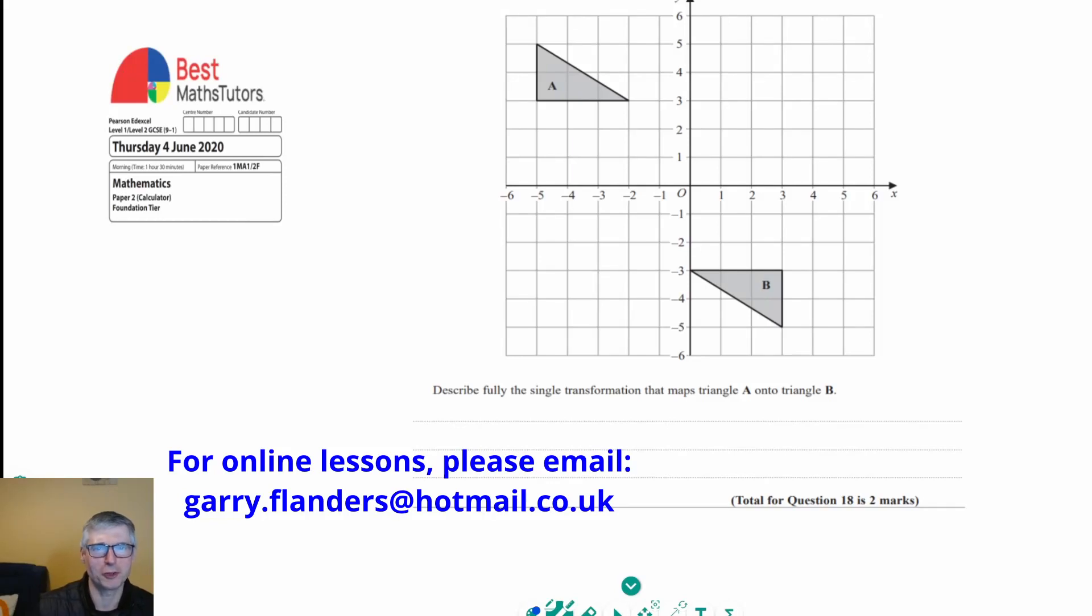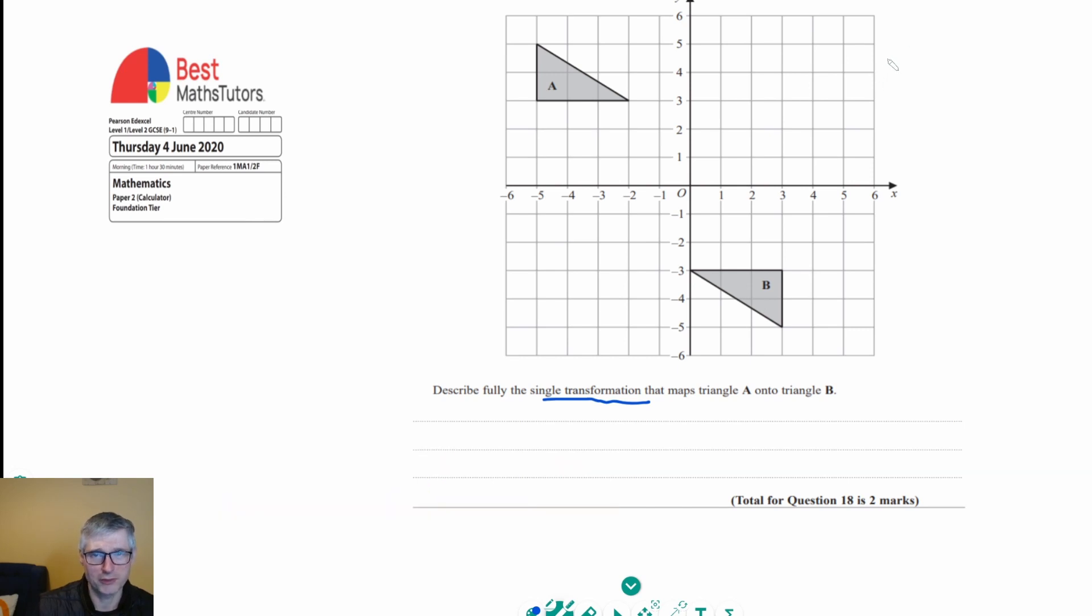This is question 18 from paper 2, and we've got to describe what type of transformation is going to map triangle A onto triangle B. So transformations come in several different types.